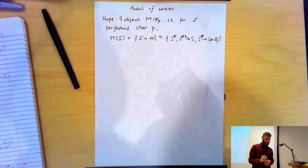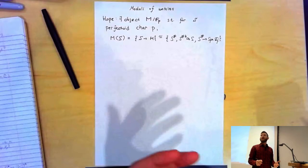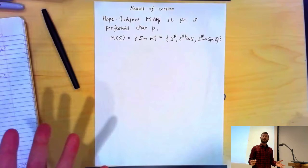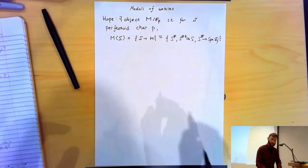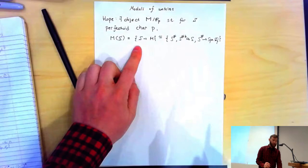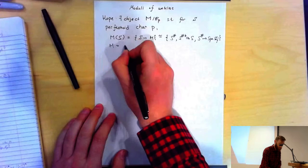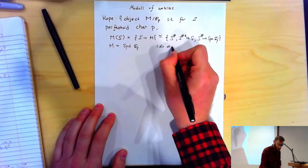An insight of Peter's is to actually construct what this object is. It lives in a category extending the category of perfectoid spaces, called the category of diamonds. Morphisms from S to M are like morphisms from S♯ to Spa Q_p, so M is sort of like Spa Q_p. This M is going to be called Spd Q_p — the diamond spectrum.